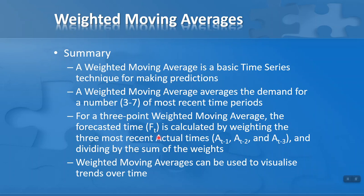In summary, a weighted moving average is a basic time series technique for making predictions. It averages the demand for a number — typically three to seven — of the most recent time periods. For a three-point weighted moving average, the forecast F(t) is calculated by weighting the three most recent actual values — AT-1, AT-2, and AT-3 — and dividing by the sum of the weights. AT-1 gets the highest weighting and AT-3 the lowest. Weighted moving averages can also be used to visualize trends by smoothing out the data. I hope you found this lesson useful.